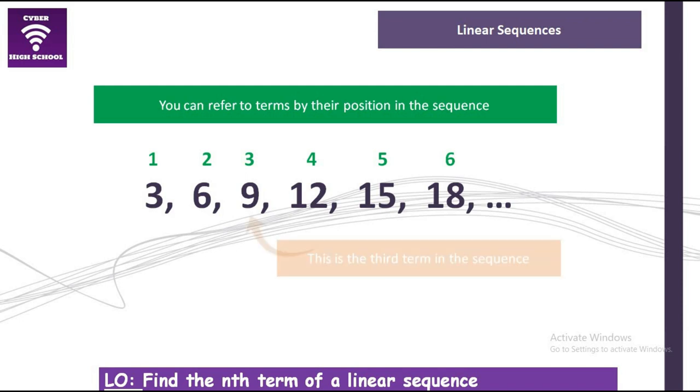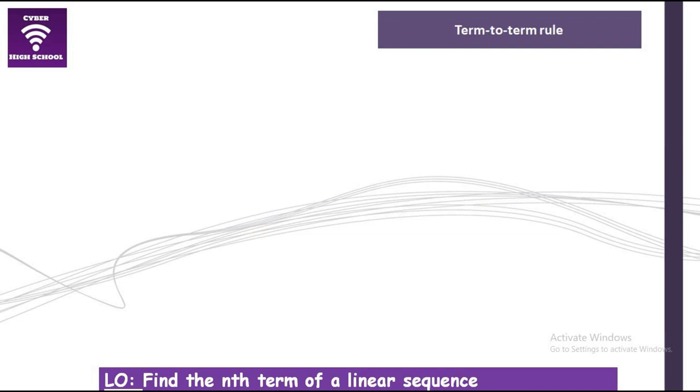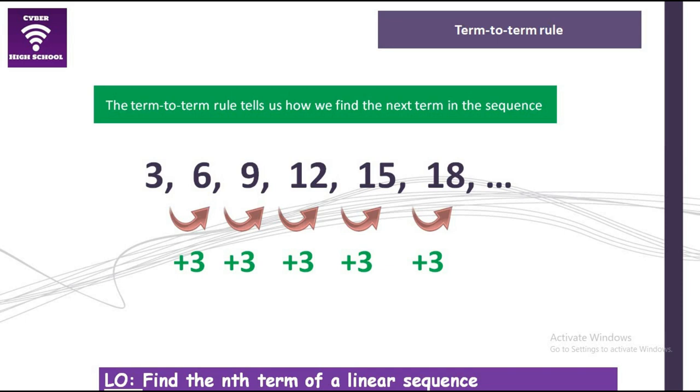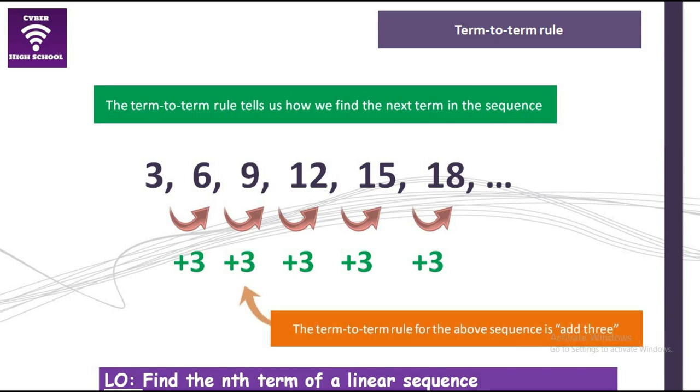Now when you look at the term-to-term rule, what you need to understand is the term-to-term rule tells us how we find the next term in the sequence. In the example that we are using, we are simply adding 3 to get to the next term. So the term-to-term rule for the above sequence is basically add 3.